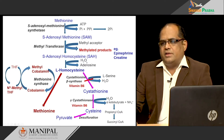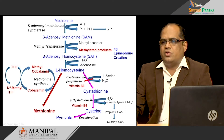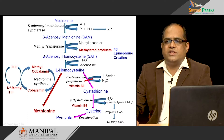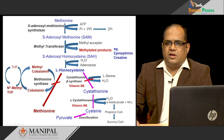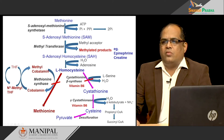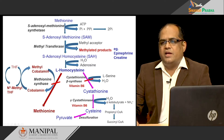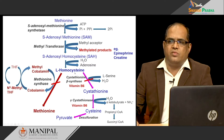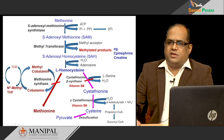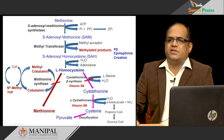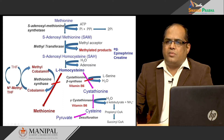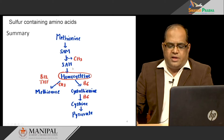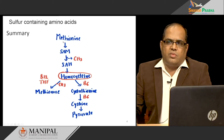Any block in the conversion of homocysteine through the cystathionine–cysteine–pyruvate pathway, or a block in the conversion of homocysteine back to methionine, will cause homocysteinemia — increased homocysteine levels in the blood leading to homocystinuria. This is clinically very important because elevated homocysteine is directly associated with coronary heart disease, stroke, and many other disorders.